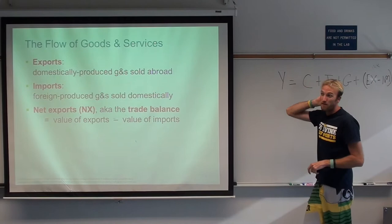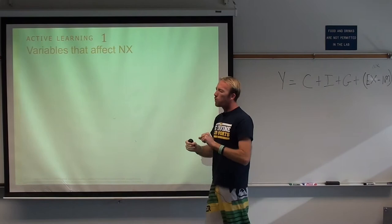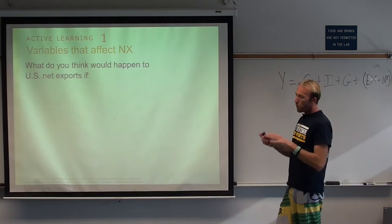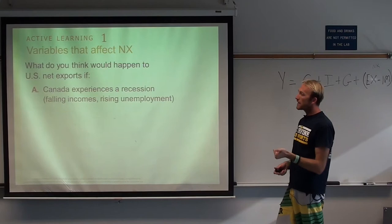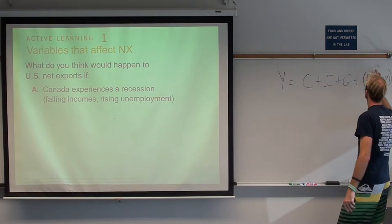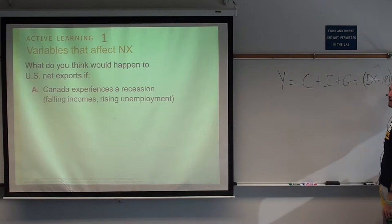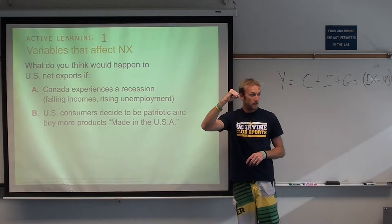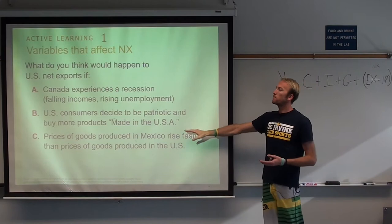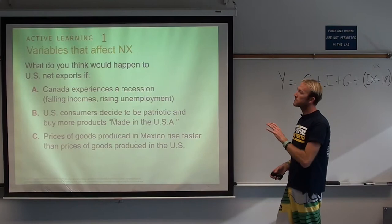And if prices of goods produced in Mexico rise faster than goods produced in the United States, people will buy more US goods — US goods become more attractive. So exports go up, imports from Mexico go down, and US net exports increase as a whole. Take a couple seconds to think through each of those three scenarios and figure out what happens to net exports.